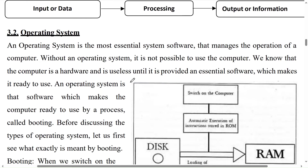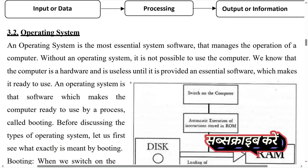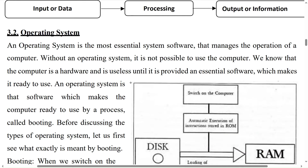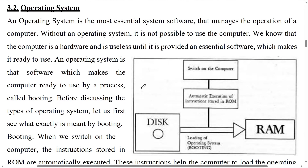Operating system: An operating system is the most essential system software that manages the operation of a computer. Without an operating system, it is not possible to use a computer. The computer is hardware and it is useless until provided with essential software. An operating system is that software which makes the computer ready to use by a process called booting.